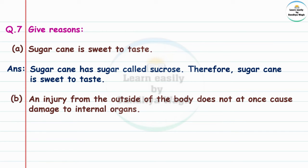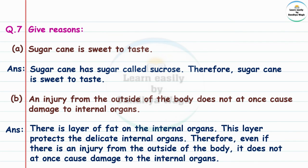Question 7b: An injury from the outside of the body does not at once cause damage to internal organs. Answer: There is a layer of fat around the internal organs. This layer protects the delicate internal organs. Therefore, even if there is an injury from the outside of the body, it does not at once cause damage to the internal organs.